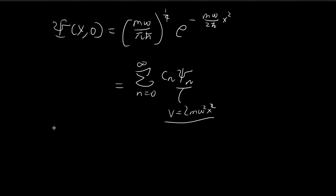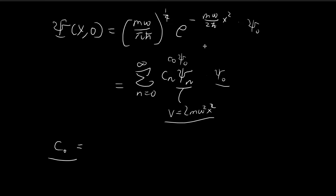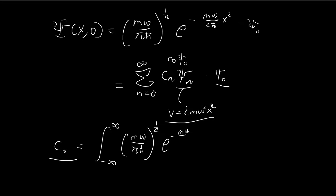To get c₀, we apply Fourier's trick: multiply both sides by ξ₀* (of the new potential) and integrate. Because ξ₁, ξ₂, ξ₃, and all higher terms are orthogonal to ξ₀, they all vanish. The only surviving term is c₀, since ξ₀ integrated against itself equals 1. On the left-hand side we are left with an integral involving ξ₀ of the new potential, which gives us c₀.